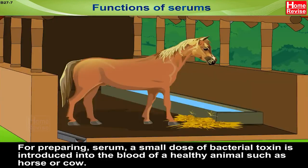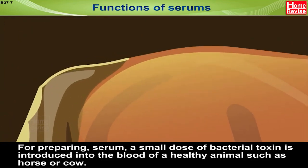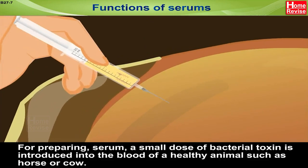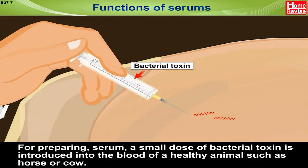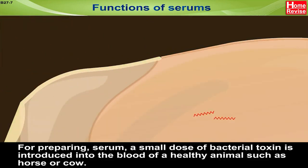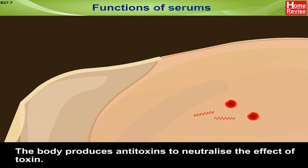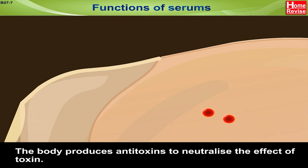For preparing serum, a small dose of bacterial toxin is introduced into the blood of a healthy animal such as a horse or a cow. The body then produces antitoxins to neutralize the effect of the toxin.